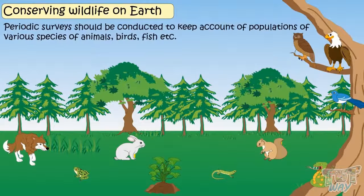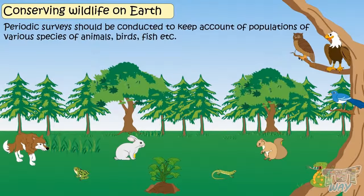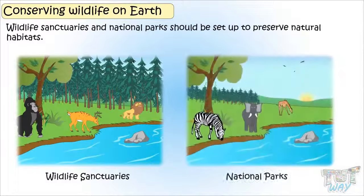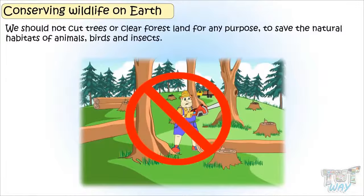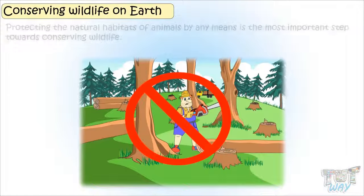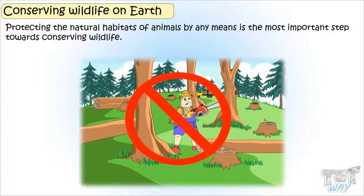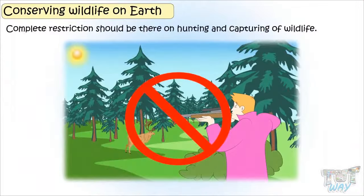Periodic surveys should be conducted to keep account of populations of various species of animals, birds, and fish. Wildlife sanctuaries and national parks should be set up to preserve natural habitats. We should not cut trees or clear forest land for any purpose, to save the natural habitats of animals, birds, and insects.